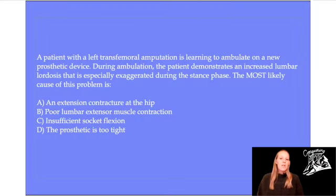Let's read our question and answers first. A patient with a left transfemoral amputation is learning to ambulate on a new prosthetic device. During ambulation, the patient demonstrates an increased lumbar lordosis that is especially exaggerated during the stance phase. The most likely cause of this problem is: A) an extension contracture at the hip, B) poor lumbar extensor muscle contraction, C) insufficient socket flexion, or D) the prosthetic is too tight.